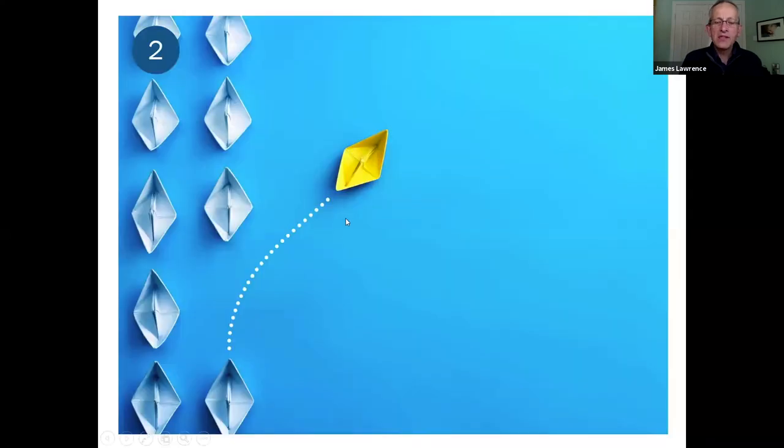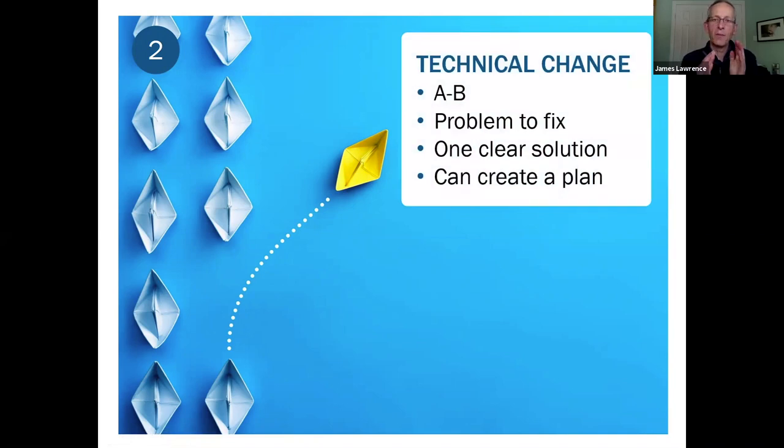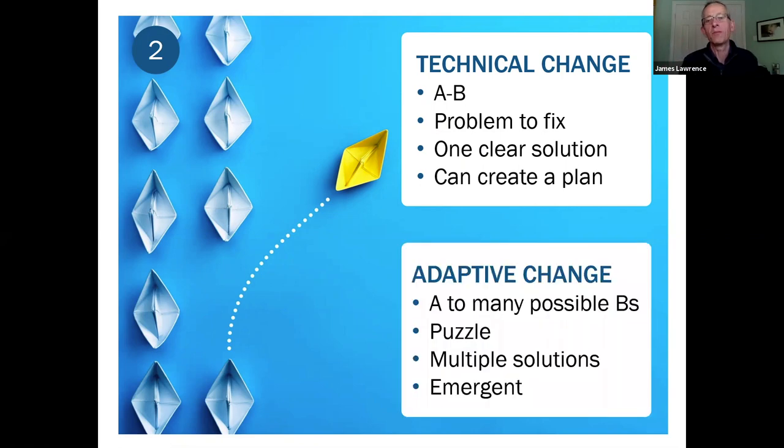Here's the second reality check: this is about the nature of the change that we're in. We're in a season of discontinuous change. Many of you will be aware of technical change—where you have an A to B sort of situation, a problem to fix with one clear solution, and you can create a plan. That's not the scenario we find ourselves in today. We're in what people call adaptive change, where it's A to many possible Bs. It's a puzzle. There are multiple possible solutions and the reality is we won't be able to plan. We've just got to see how things emerge. Pivot seems to be the word of the season, doesn't it? And it seems much more like zigzags because we're having to make so many pivots in this season of discontinuous adaptive change.